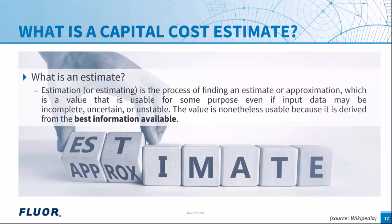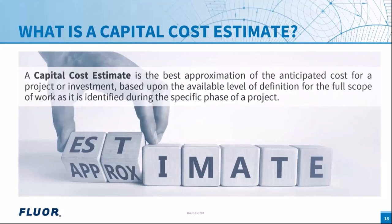Combining both definitions, a capital cost estimate is the best approximation of the anticipated cost for a project or investment, based upon the available level of definition for the full scope of work as identified during a specific phase of a project. Early in the project the estimate may be less accurate, but it is still based on the best information available at that time, giving us the ability to always produce an estimate.